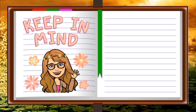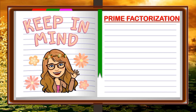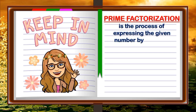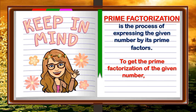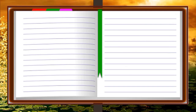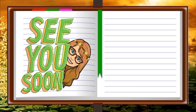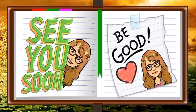Children, keep this in mind. Prime factorization is the process of expressing the given number by its prime factors. To get the prime factorization of the given number, use the factor tree or ladder method. For now, children, we're done with our online discussion. See you soon and always remember, be a good person.